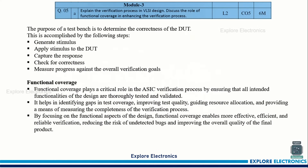Coming to Module 3: explain the verification process in VLSI design and discuss the role of functional coverage in enhancing the verification process. The basic process involves: generating the stimulus, applying the stimulus to the DUT, capturing the output response from the DUT, checking for correctness, and measuring progress against verification goals — five steps. Functional coverage is very important in verification to determine how much functionality of the design is checked using the verification stimulus. Three marks each will be allocated for the verification process and functional coverage.